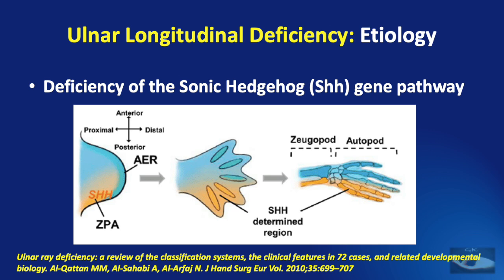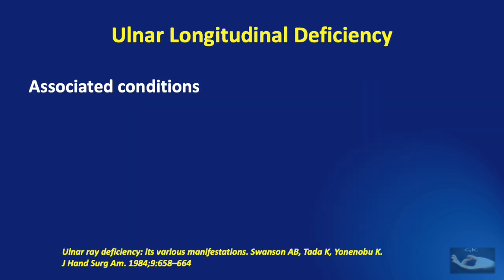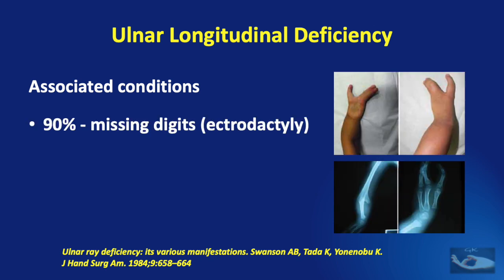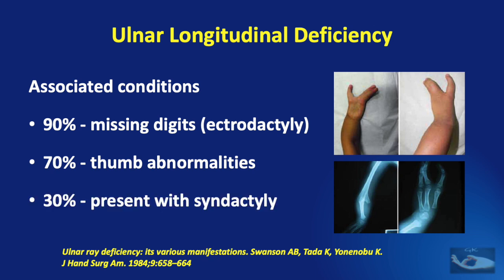This sonic hedgehog gene deficiency explains the thumb abnormalities that occasionally accompany Ulnar dysplasias. The common associated conditions with Ulnar longitudinal deficiency are missing digits or ectrodactyly, present in 90% of cases; thumb abnormalities, present in 70% of cases; and syndactyly, present in 30% of patients presenting with Ulnar longitudinal deficiency.